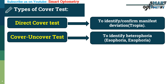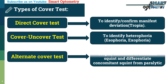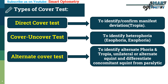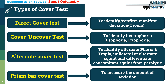The alternate cover test is performed to identify alternate phoria and tropia, unilateral and alternate squint, and to differentiate concomitant squint from paralytic squint. The prism bar cover test is performed to measure the amount of deviation in prism diopters.